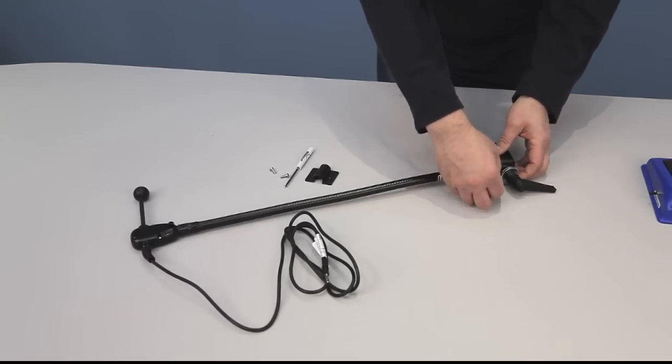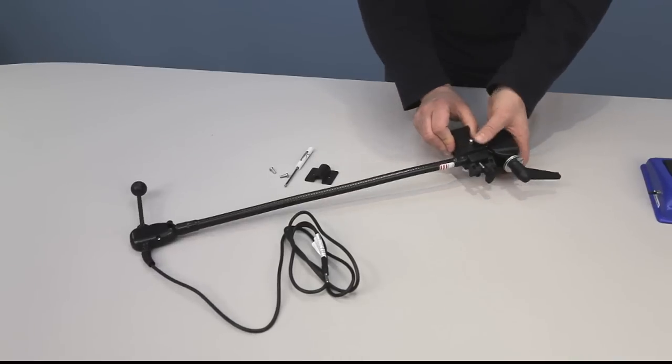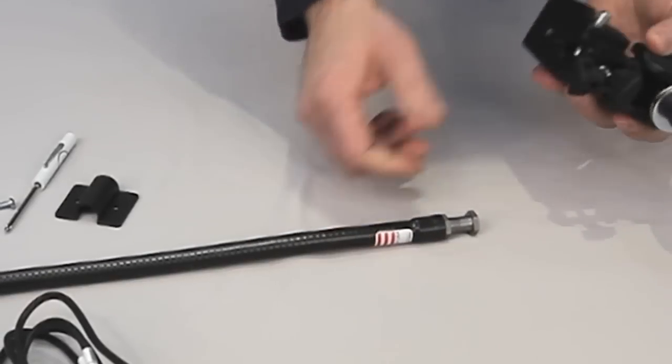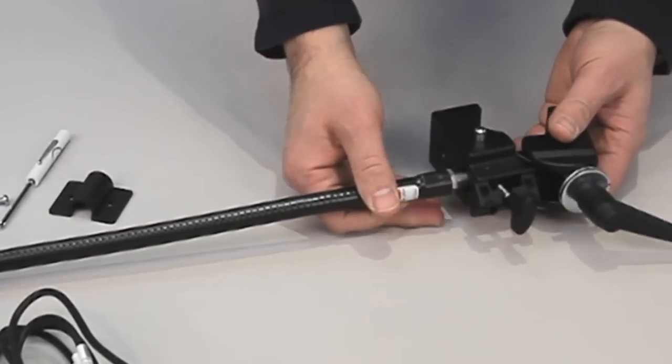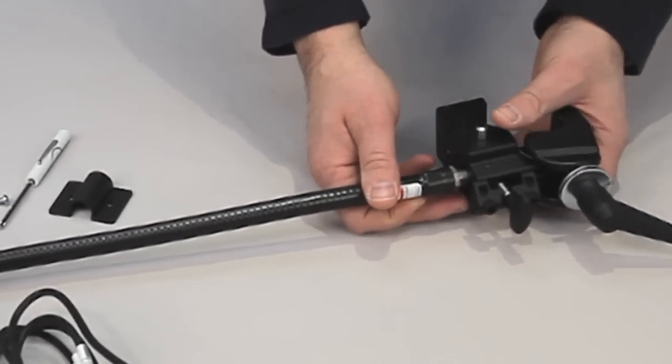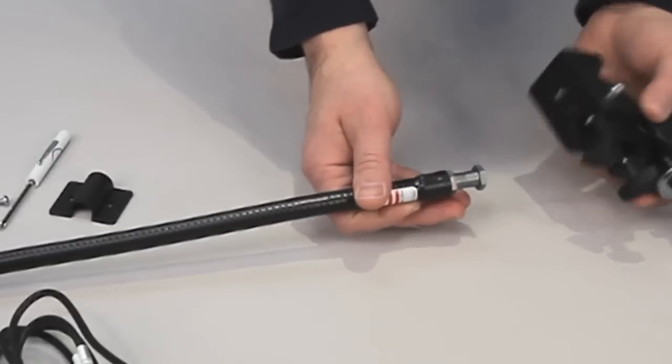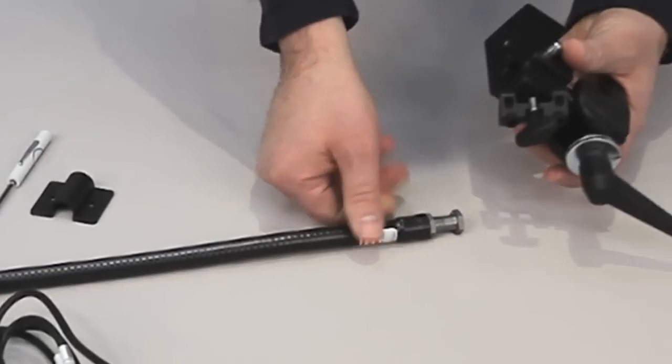There's a set screw here which you loosen up, and then there's a quick release button so that you can take this on and off pretty quickly. If you have extra clamps, you can have those set up at different locations. To install it, you set the screw, back the set screw out all the way.